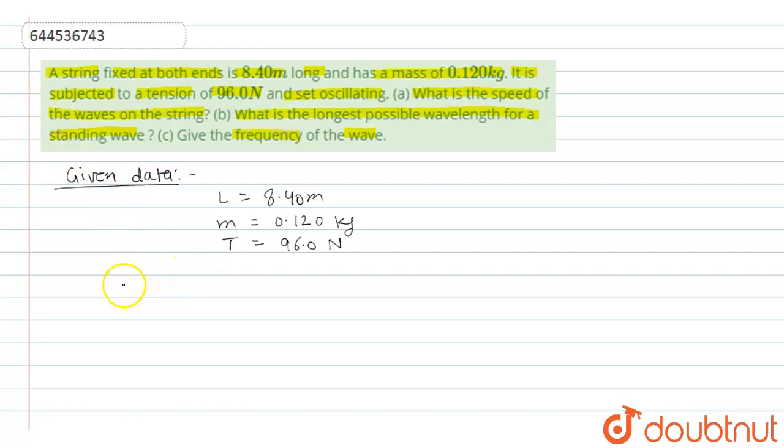The mass per unit length of the string can be calculated as M upon L. This will be equal to 0.120 upon 8.4 and this will be equal to 0.0143 kg per meter.